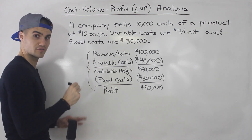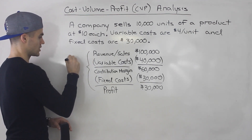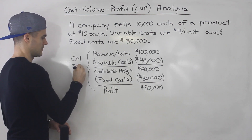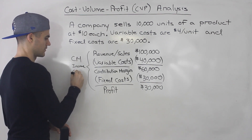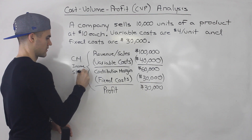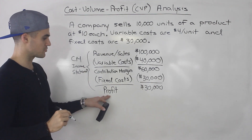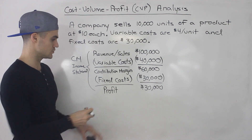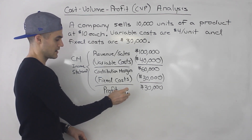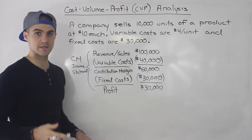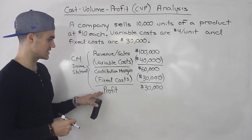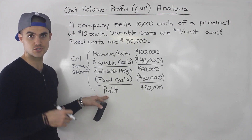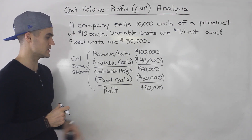This type of income statement is called a contribution margin income statement. Sometimes this profit figure, depending on the textbook and the course you're doing, you may see it referred to as net income or as operating income. I'm just going to keep it general and call it profit, but make sure you adjust this to whatever your textbook is using.